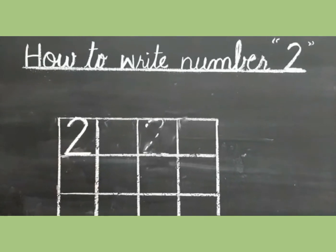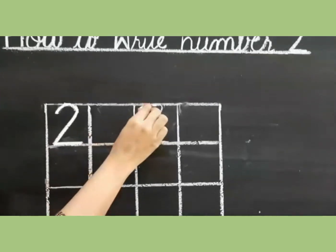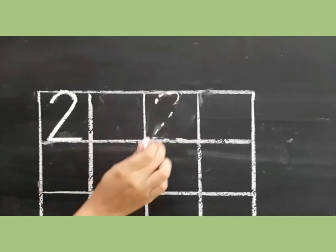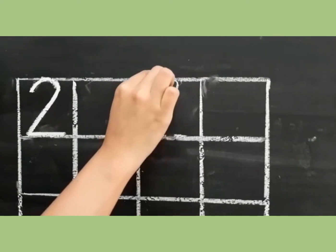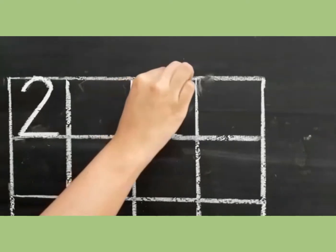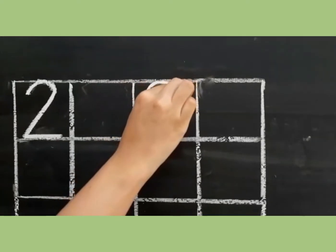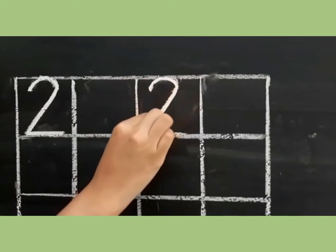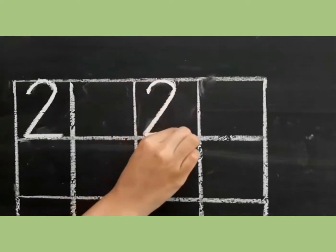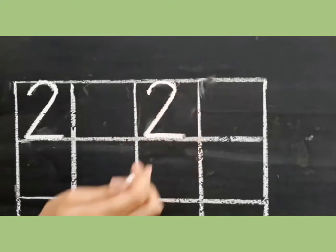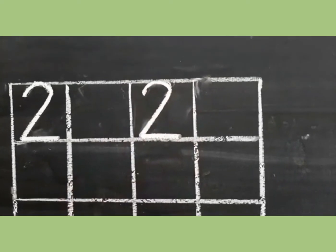Once again, how to write number 2? Go up, around, go down, then straight across. This is number 2.